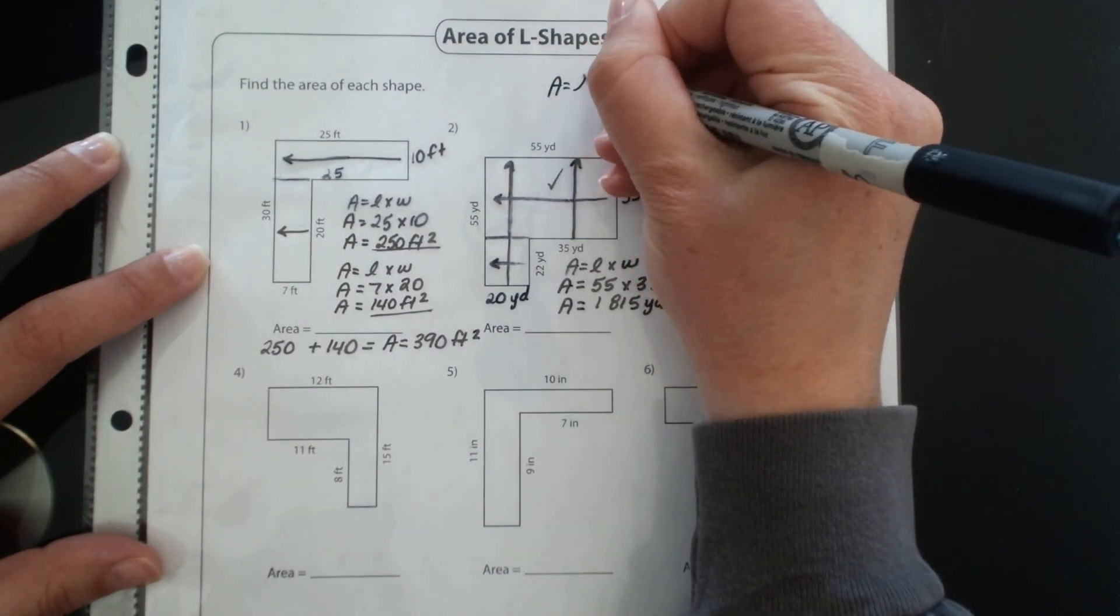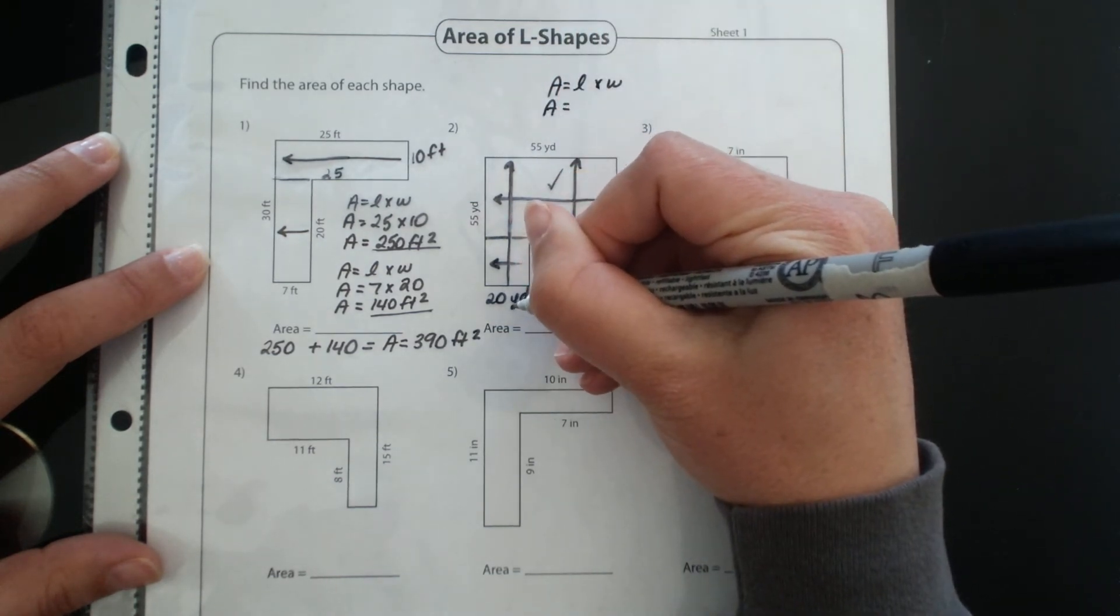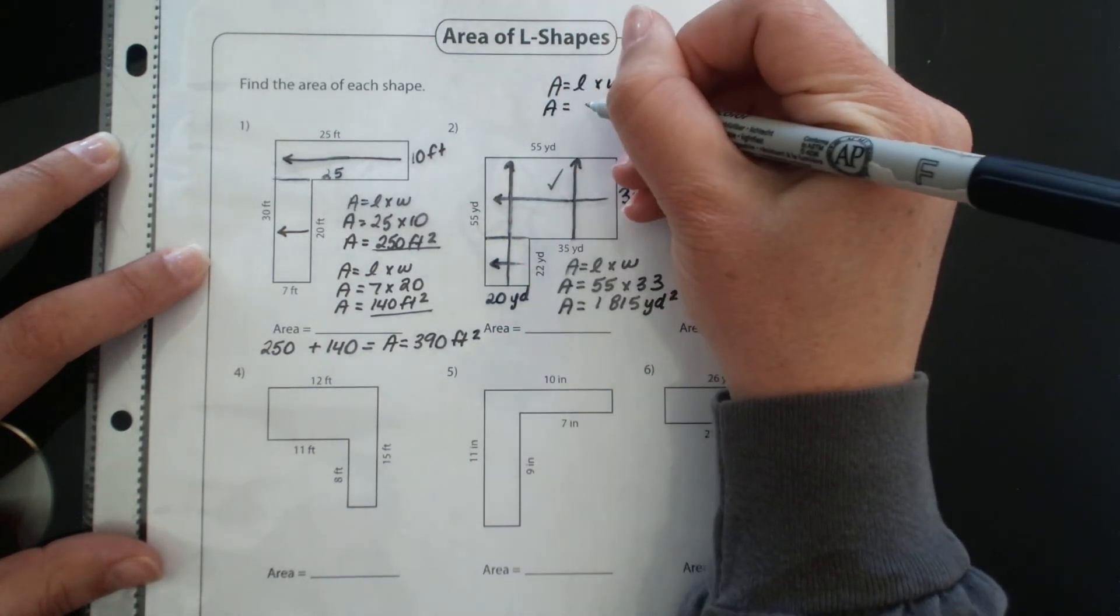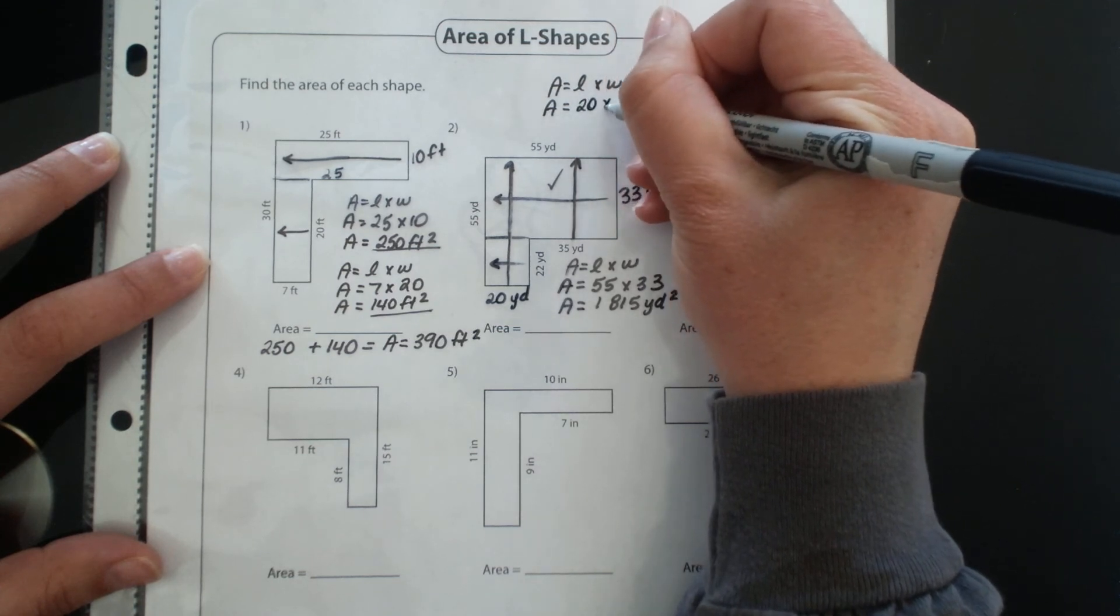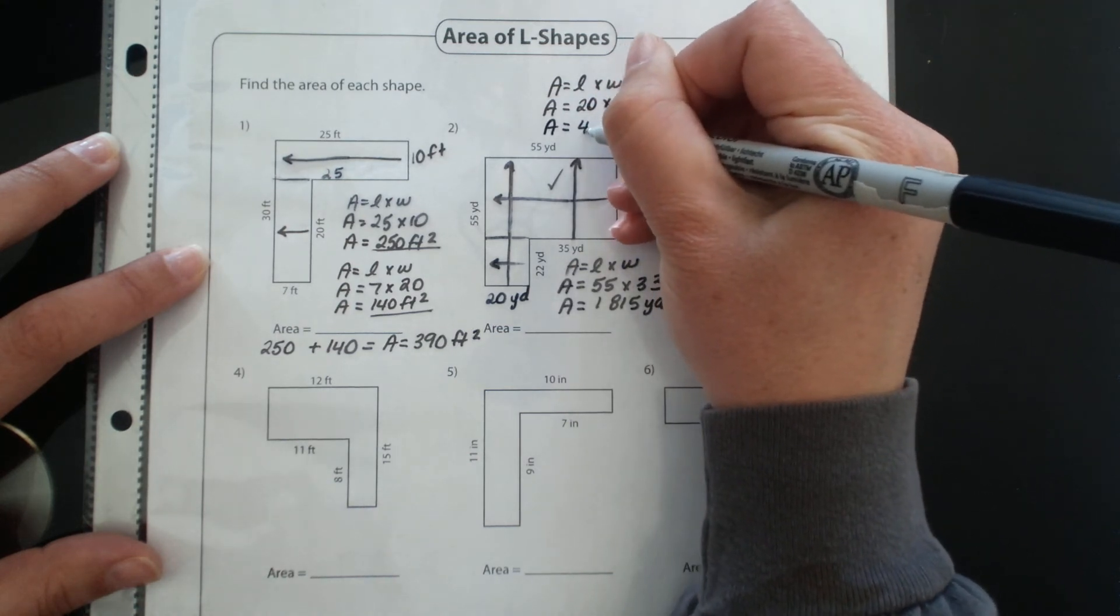So area equals length times width, area equals 22 times 20, area for that bottom shape is 440.